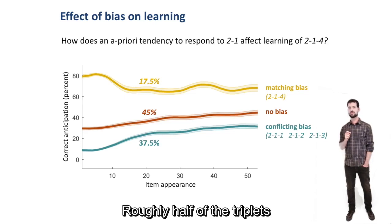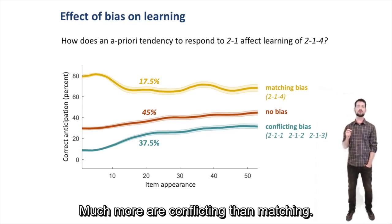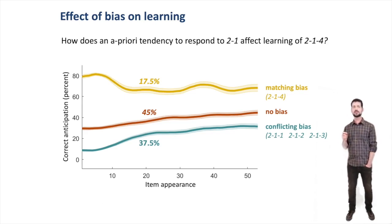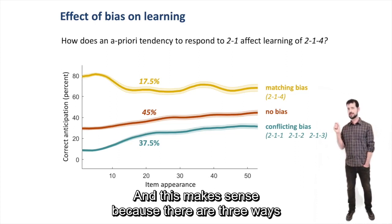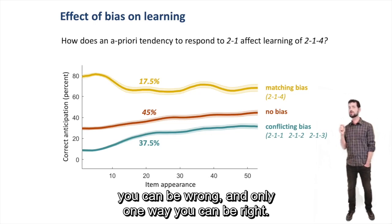Roughly half of the triplets have a bias associated with them, and much more are conflicting than matching. And this makes sense, because there are three ways you can be wrong and only one way you can be right.